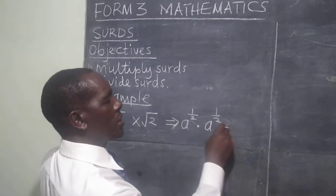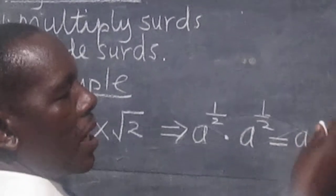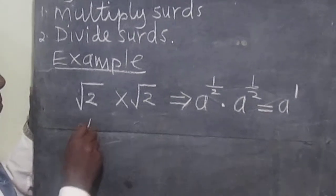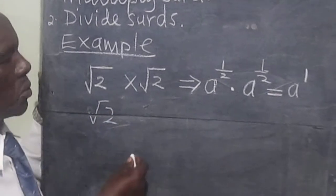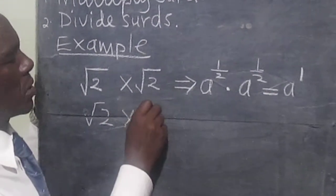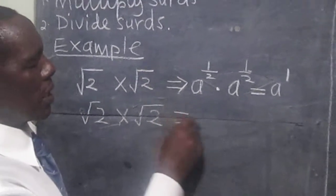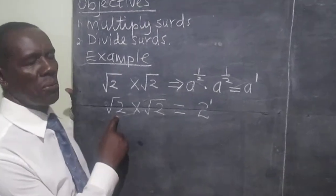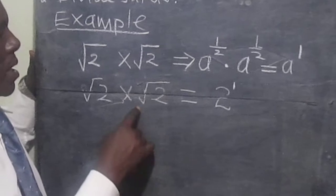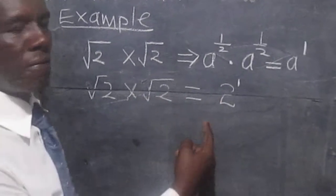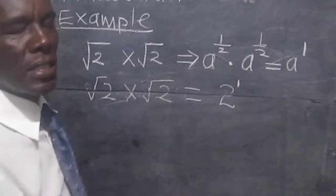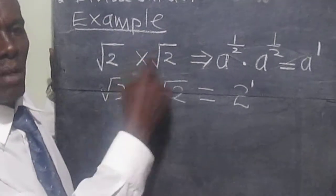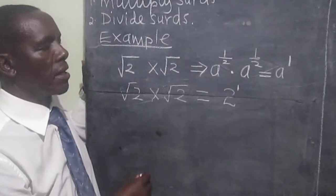And therefore, this will give us a raised to a half plus a half, which is a raised to one. It therefore means when we multiply the square root of two by the square root of two, we will get two raised to one. Because square root of two means two power half, and the other square root of two is two power half. Two power half times two power half — same base, we add the powers — and therefore it becomes two power one. So when we multiply a third by another one, the square root sign is no longer there.